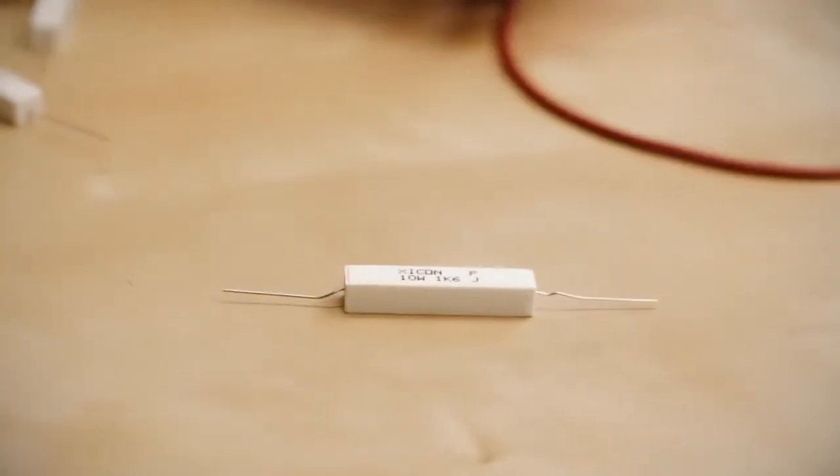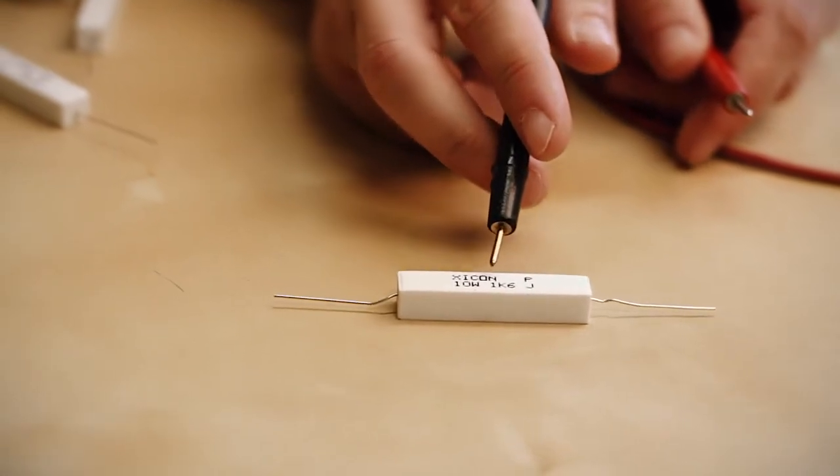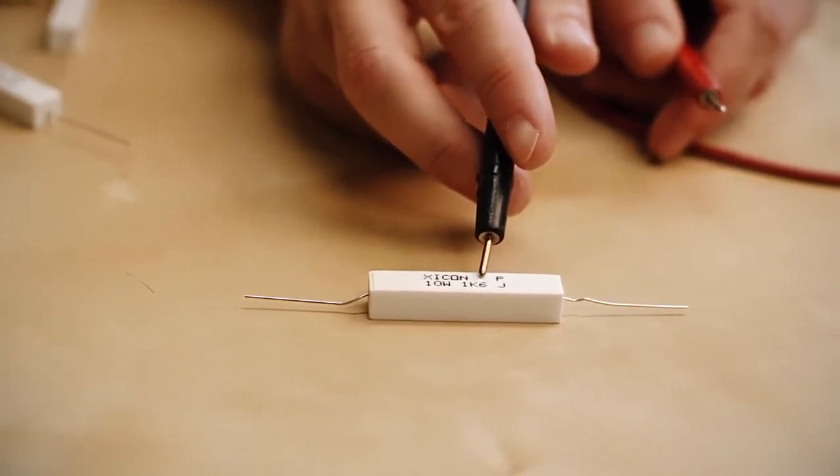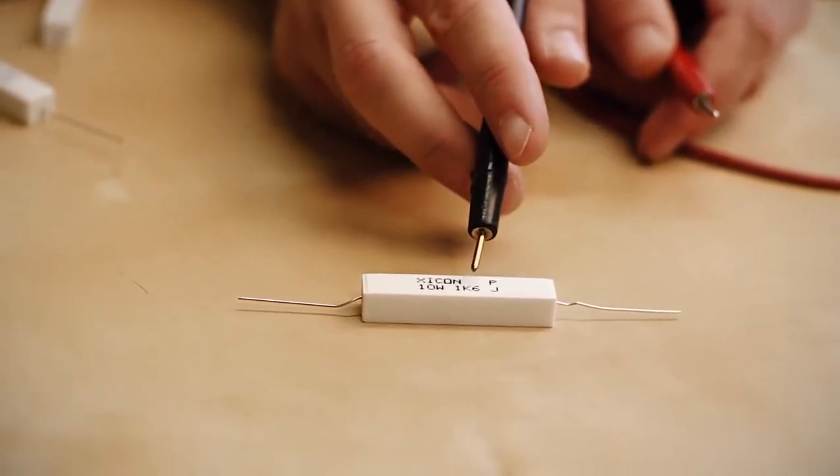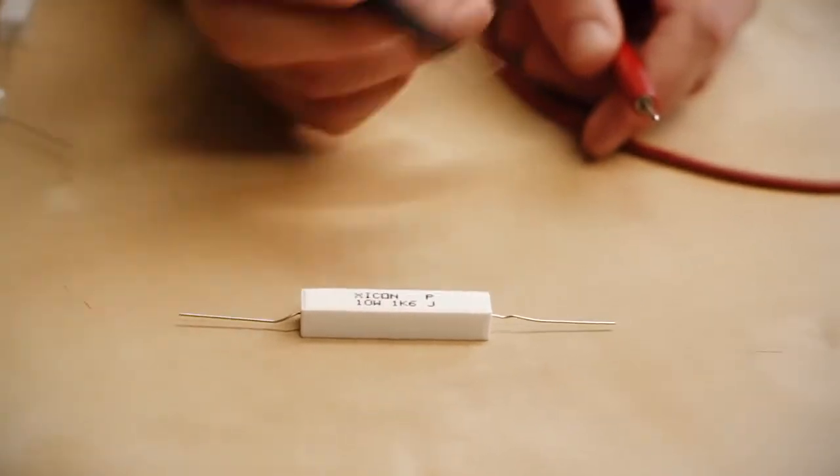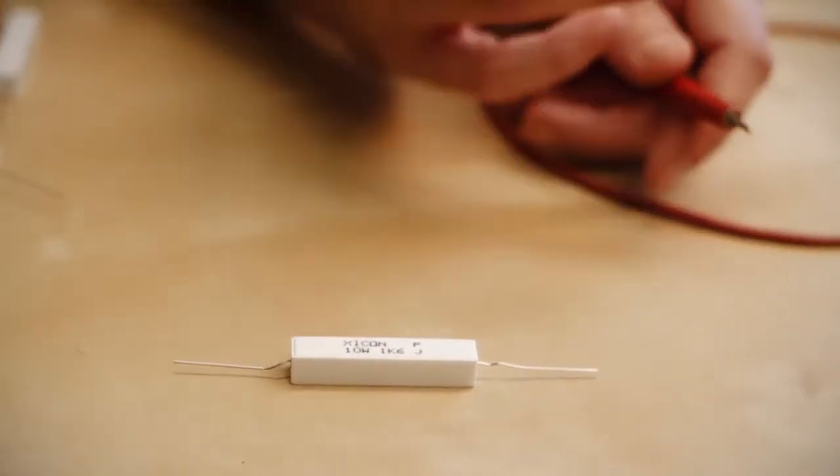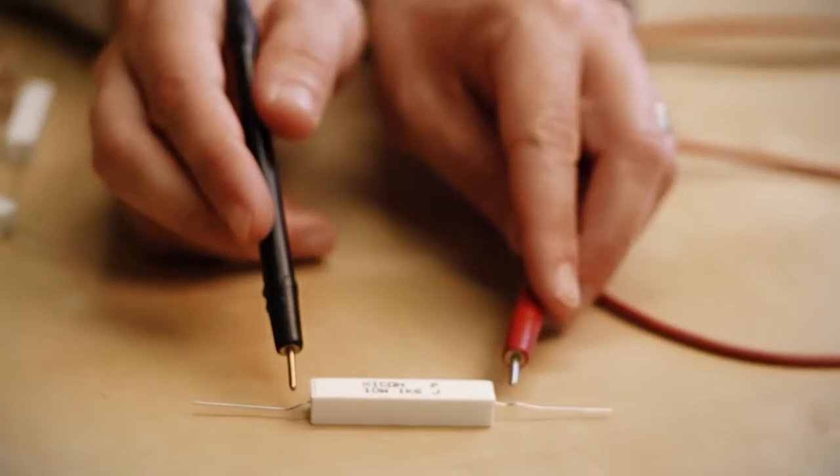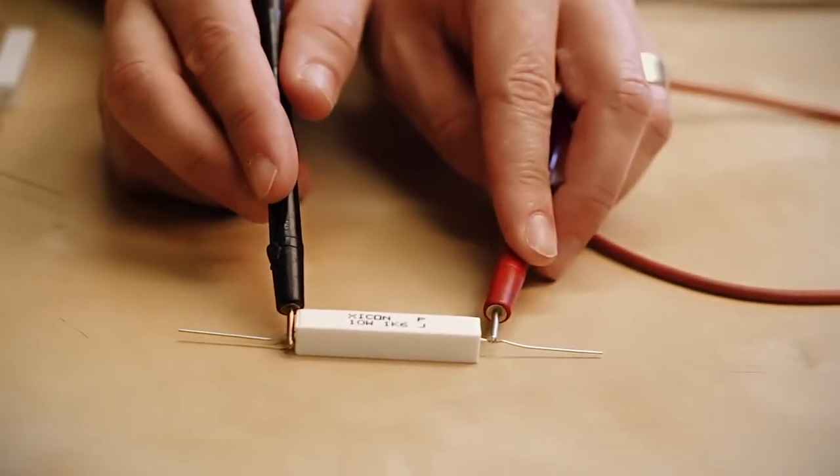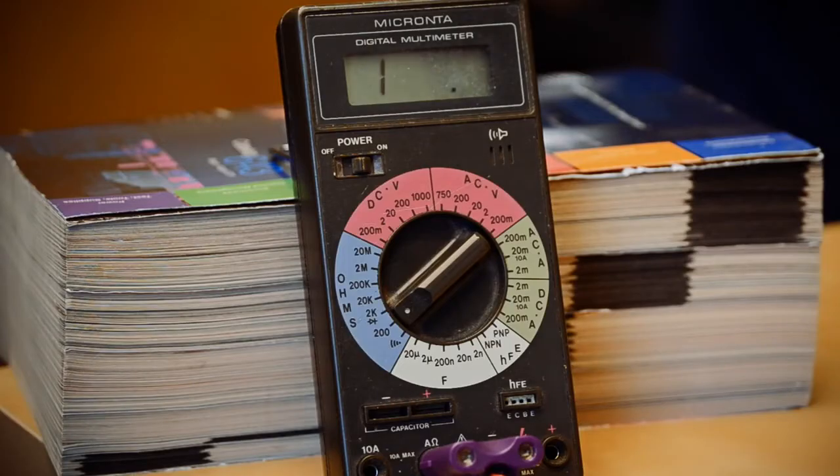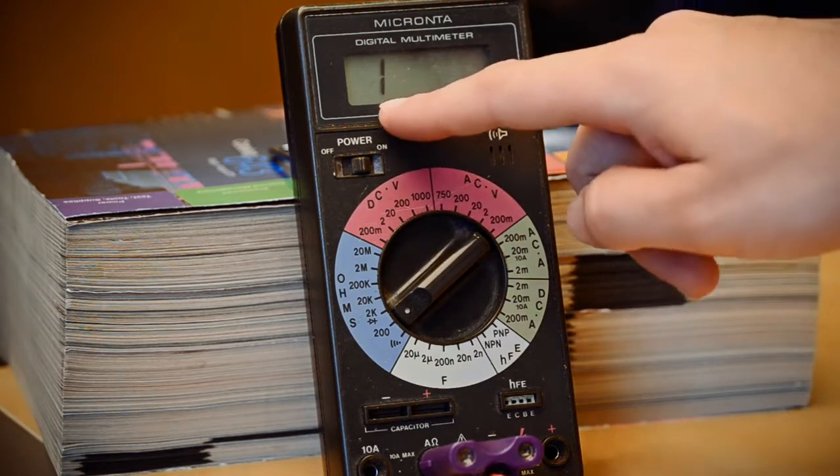Next, we're going to measure a 1.6K resistor. It's marked 1K6. The K is showing the decimal point, telling you that it's a 1,600-ohm resistor. You can express it either way. If you measure it on the 200 scale like we were on before, it's going to read over limit. It's going to show a 1 on the left side.